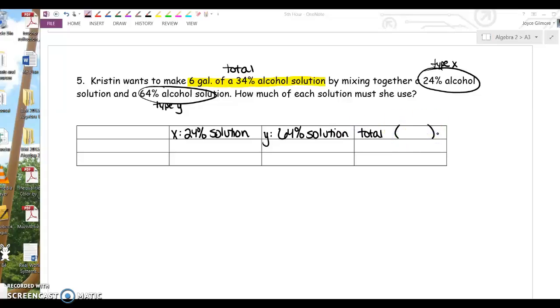What percent do we want our total to be? 34%. We have information about the percent of alcohol in the solution, and we have information about the amount, which is in gallons.